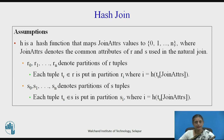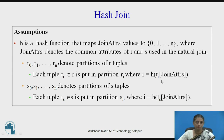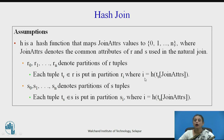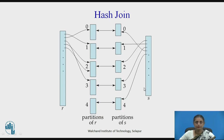r0, r1, up to rn denote the partitions of r tuples, where each tuple t_r in r is put into one partition based on its hash value. The hash function is applied on the joining attributes of that tuple, and whatever value is obtained, the respective tuple is sent to that particular partition. The same is applicable for relation s.